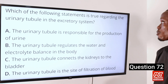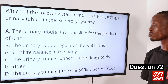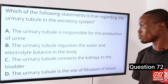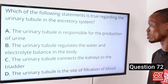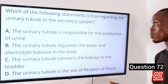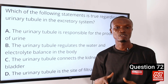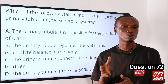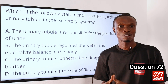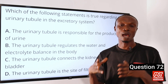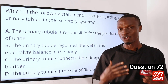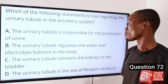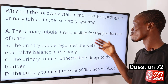Question 72: Which of the following statements is true regarding the urinary tubules? A: The urinary tubule is responsible for the production of urine. B: It regulates water and electrolyte balance. C: The urinary tubules connect the kidneys to the bladder. D: The urinary tubule is the site of filtration of blood. The answer is option A. The urinary tubule is a part of the nephron in the kidney, responsible for the production of urine. It does this by reabsorbing useful substances from the filtrate such as glucose and ions, and excreting waste products. The modified filtrate, now called urine, is passed to the bladder for storage and subsequent elimination. So option A is the correct option.